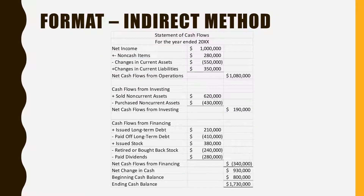This is the basic format of the statement of cash flows using the indirect method. You start with net income, add back any non-cash expenses like depreciation, then subtract changes in current assets and add back changes in current liabilities. Keep in mind it's the change that either adds or subtracts — a decrease in a current asset would actually be added. You then do investing and then financing, and those three sections must go in that order: operations, then investing, then financing.